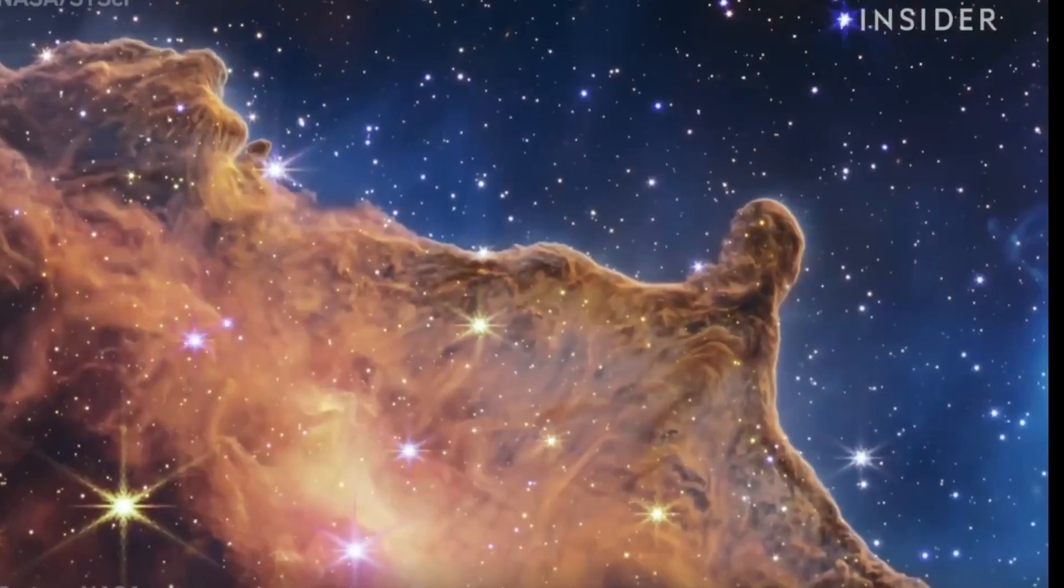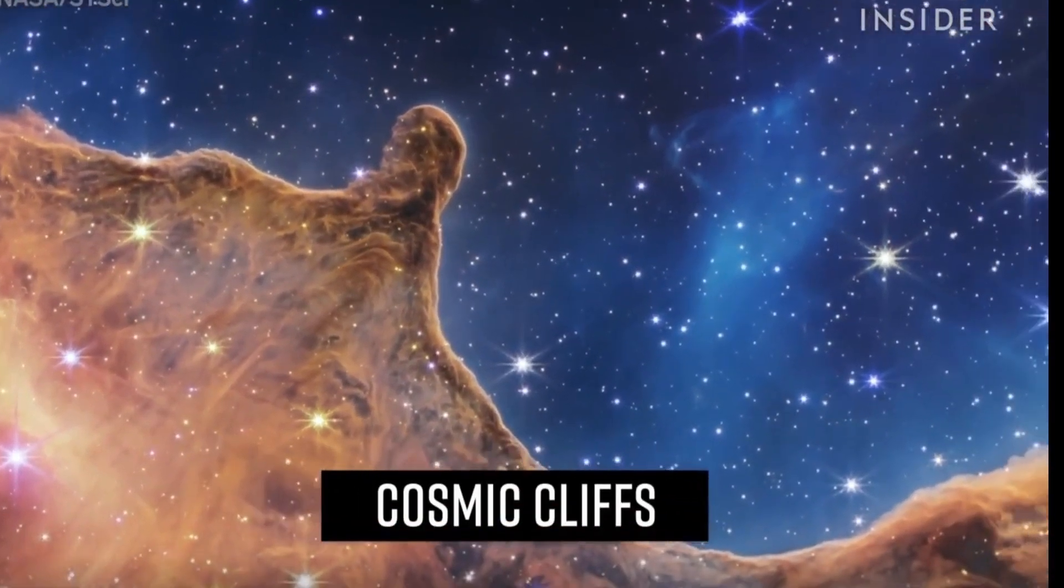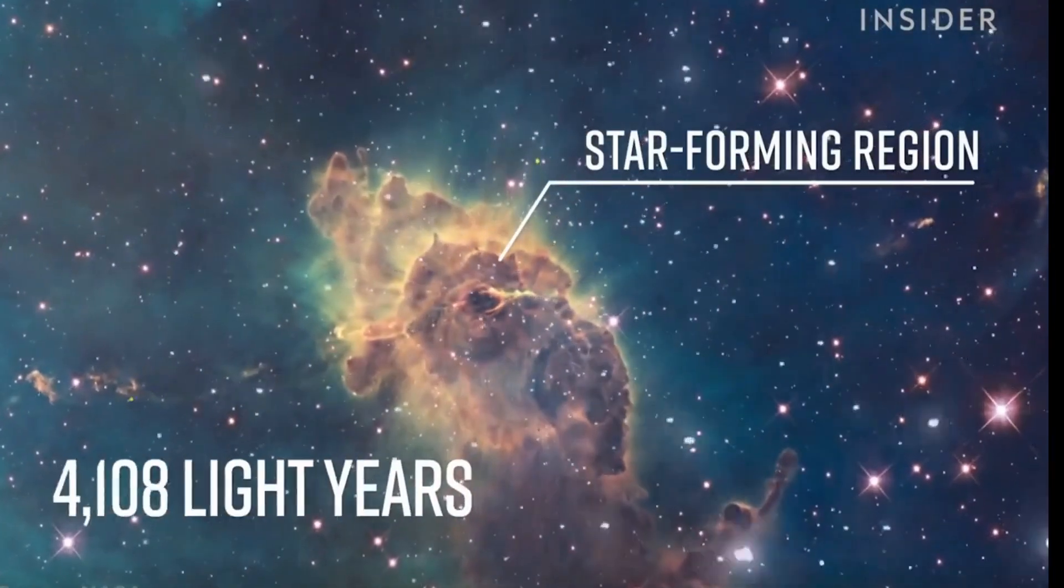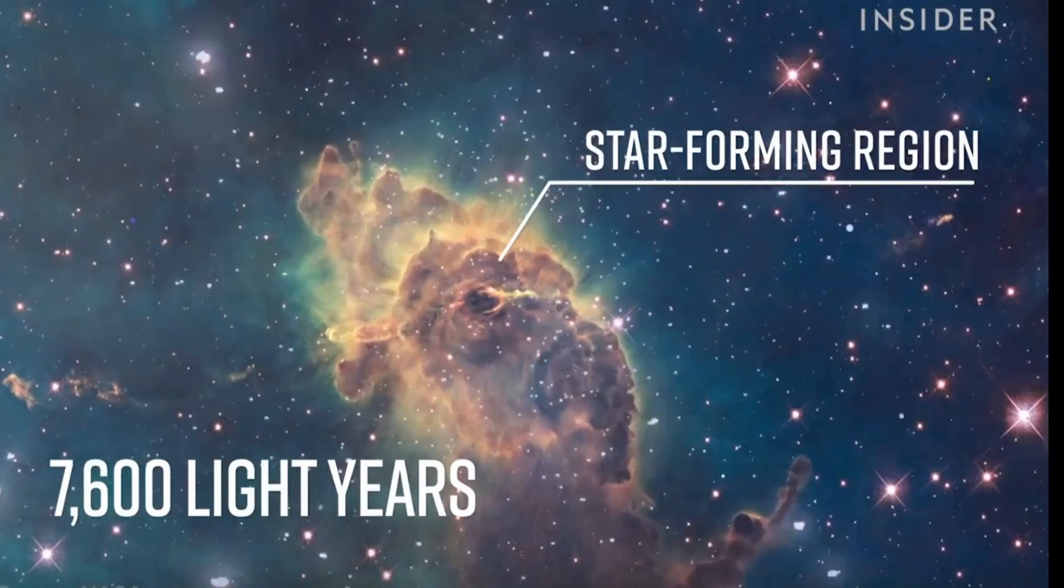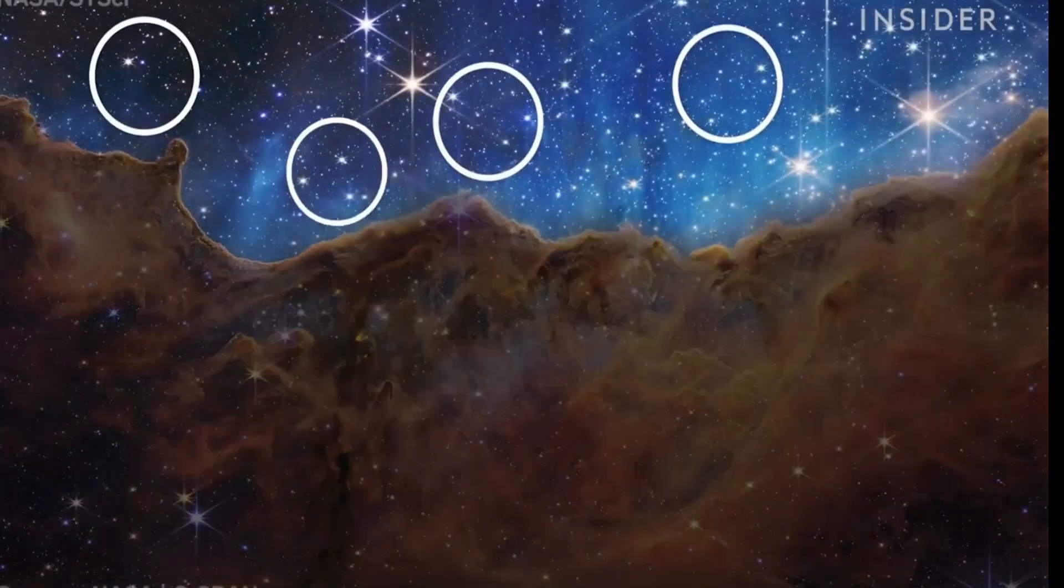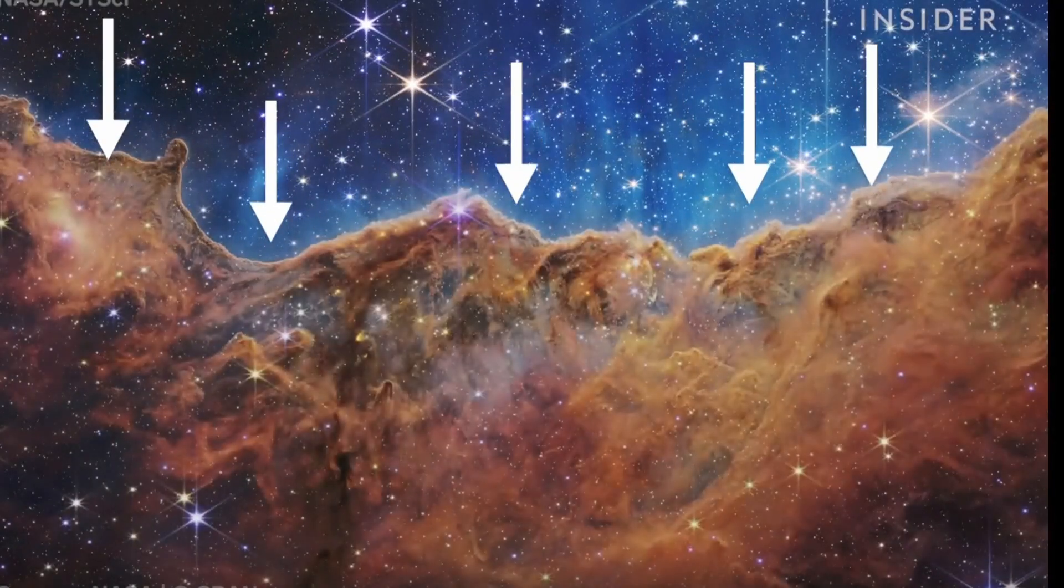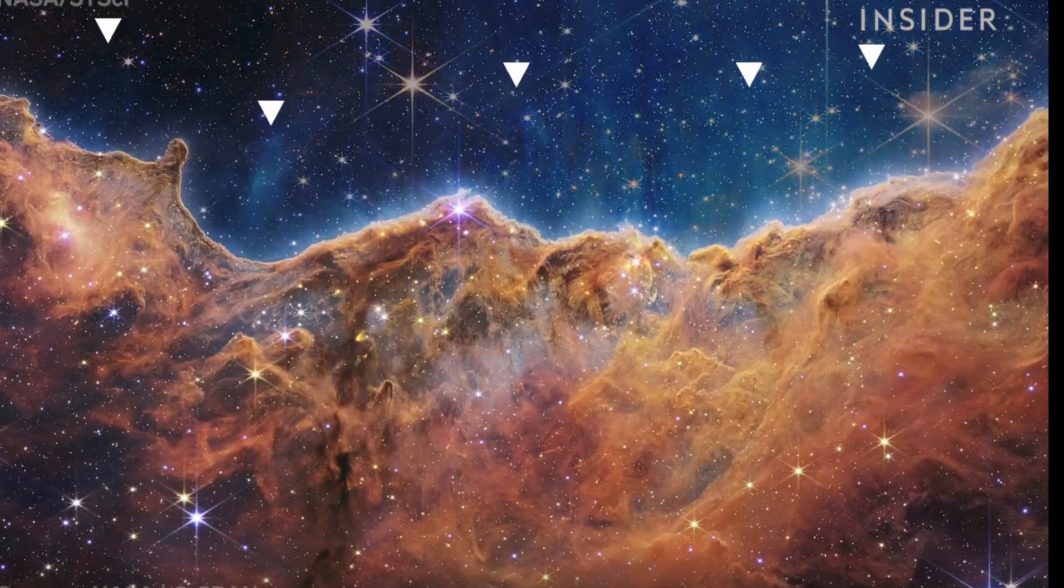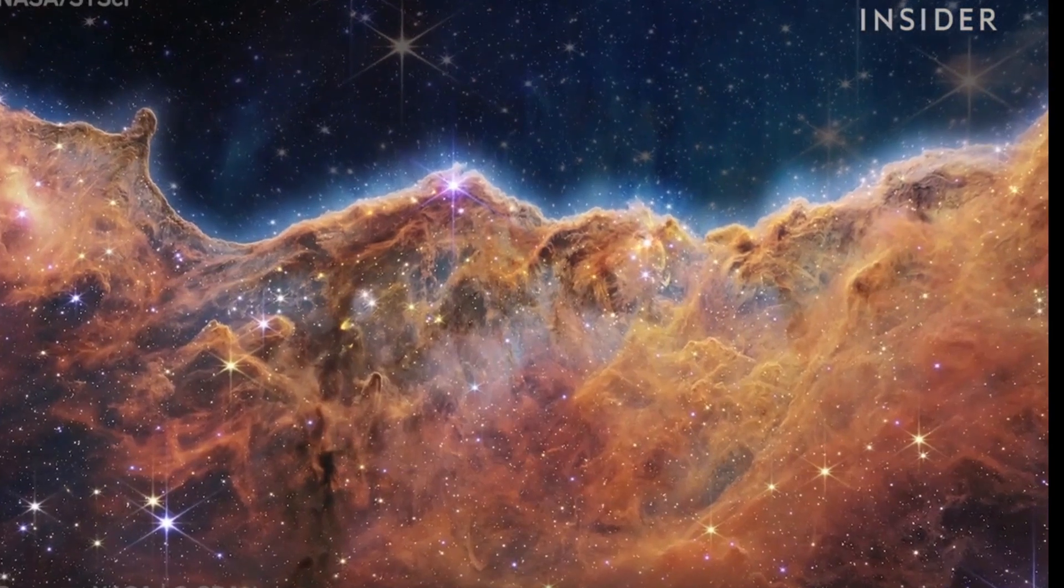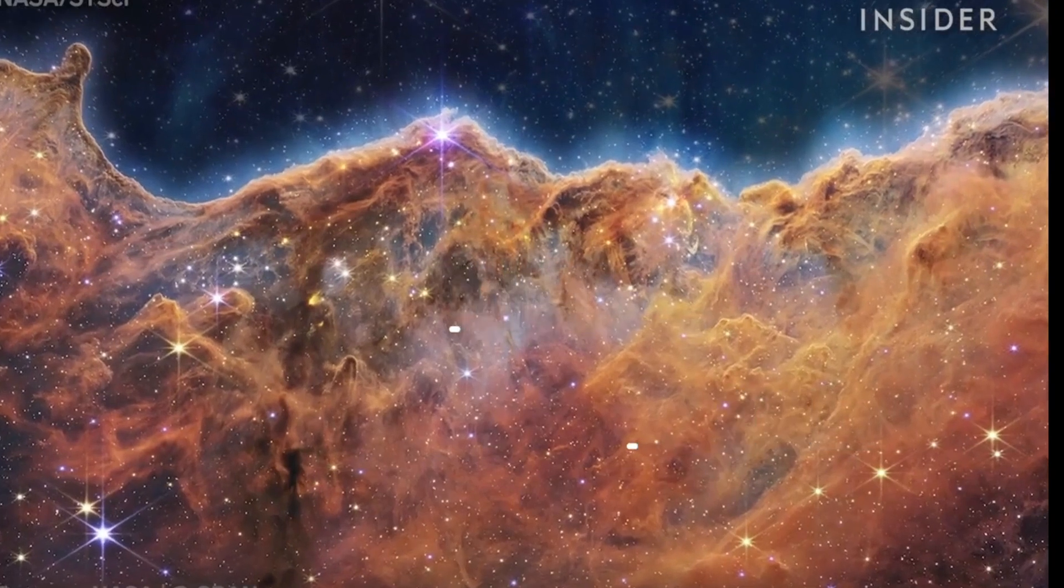And here, Webb captures star birth. Astronomers call these the Cosmic Cliffs, located inside the Carina Nebula. That's a star-forming region about 7,600 light years away, but still within our own Milky Way. New, young stars up here are producing radiation and strong winds, pushing gas and dust downward in this gigantic cloud. Scientists say dust clouds like these are breeding grounds for new planets and stars. They're already seeing hundreds of them here.